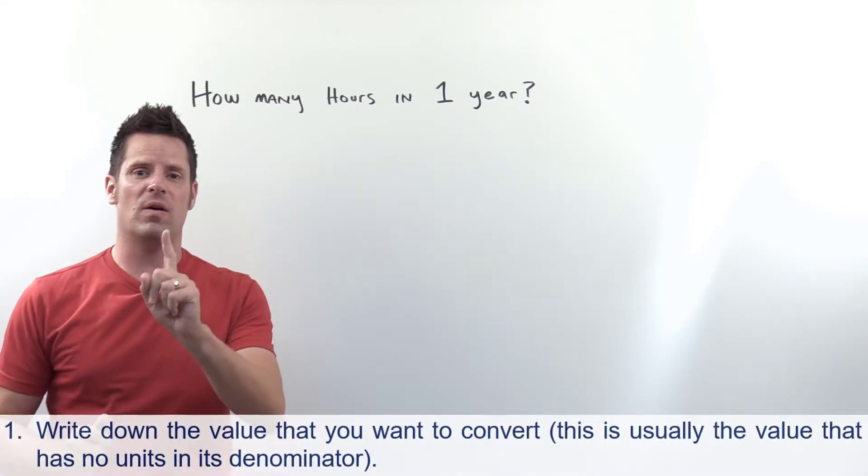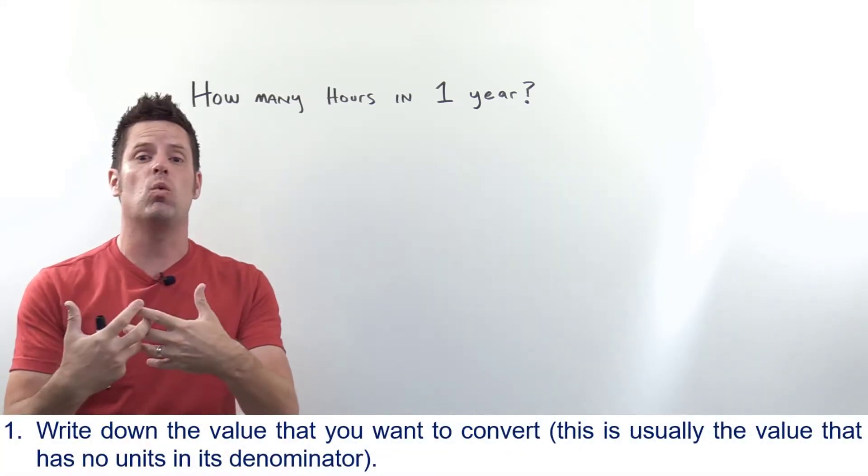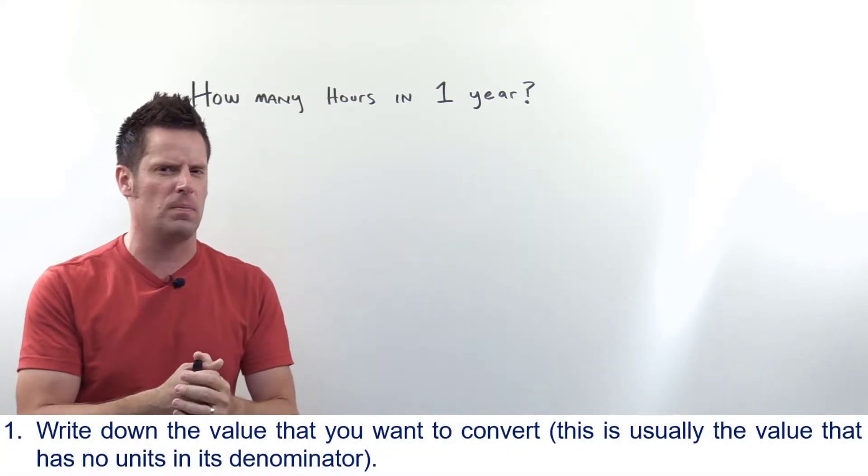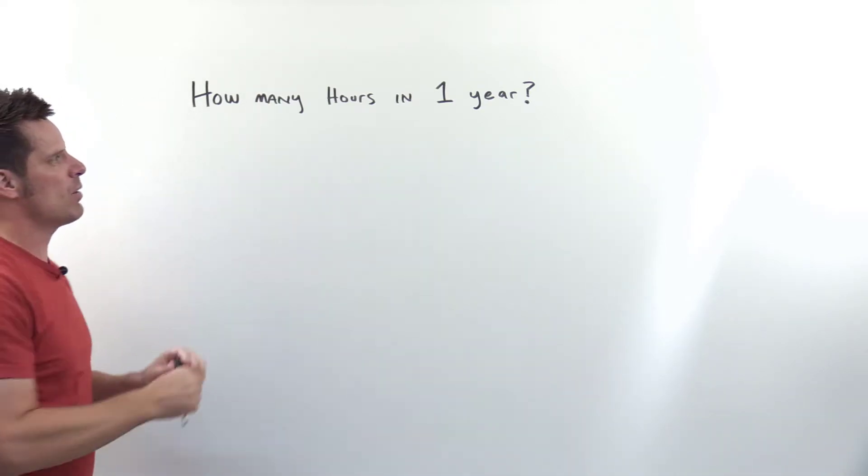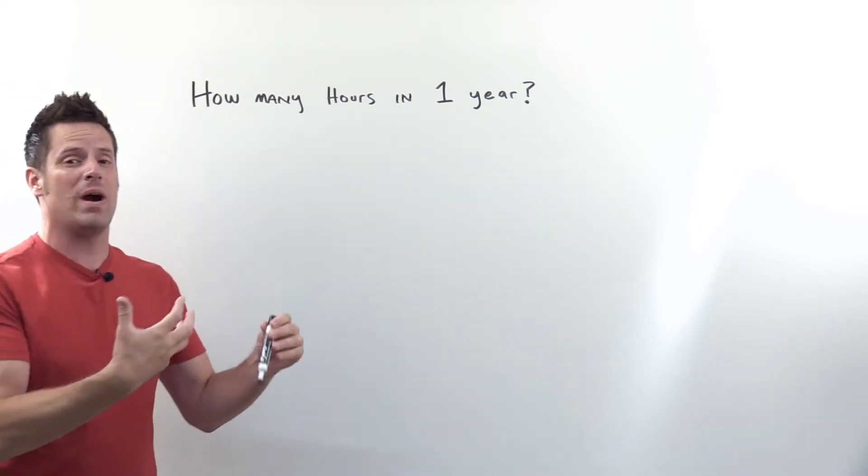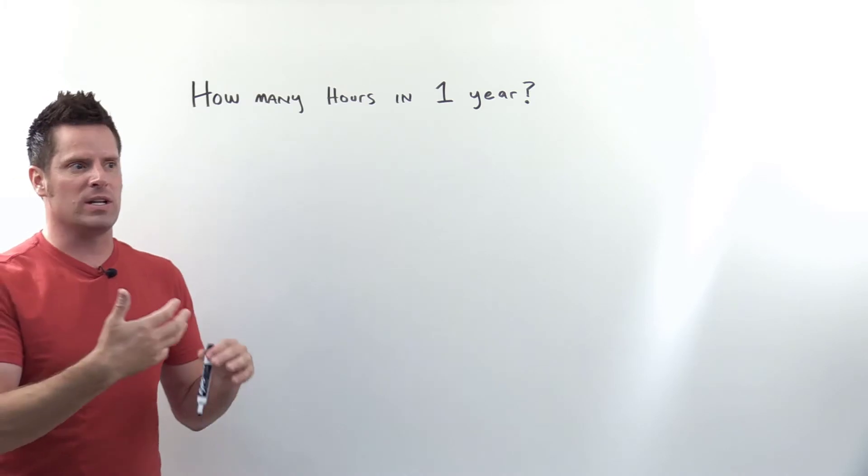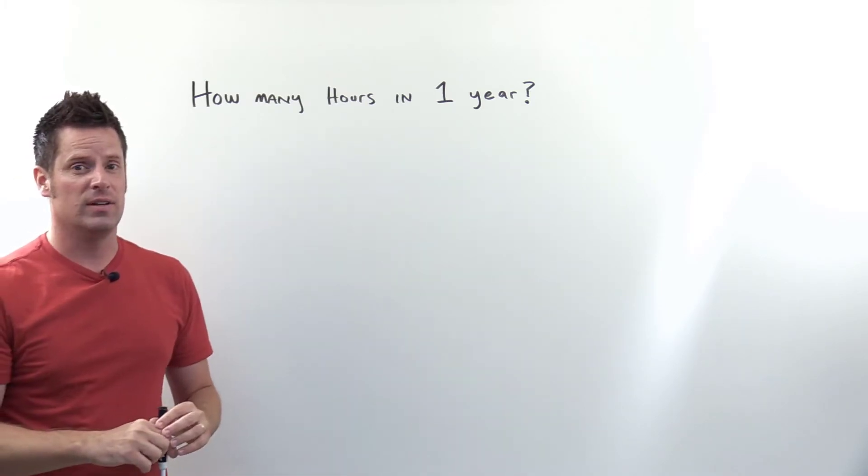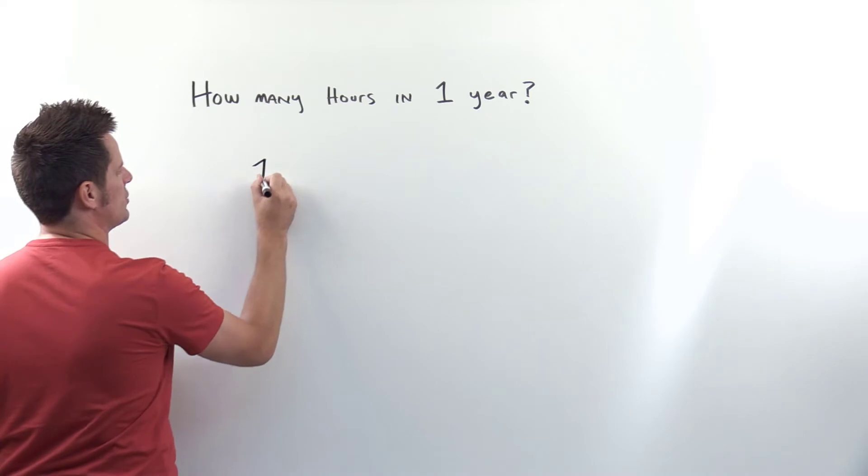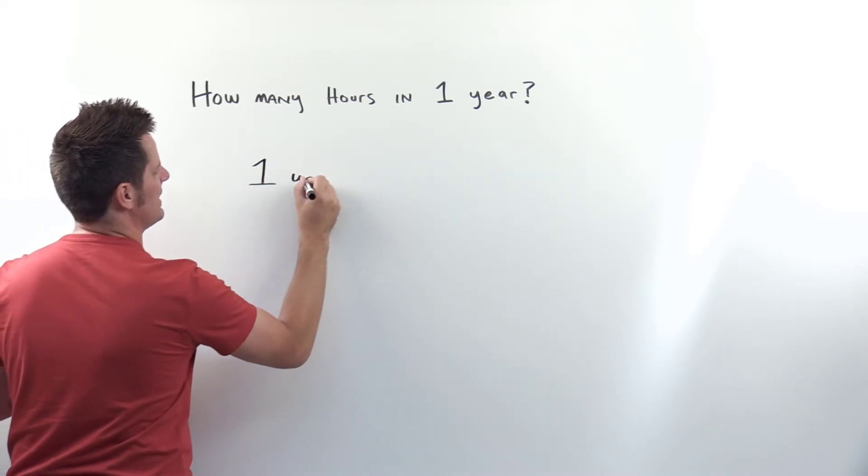The first step is to write down the value you were given. This problem asks how many hours are in one year. What value do I know that I'm converting? It's the year. So I'll start with step one by writing down one year.